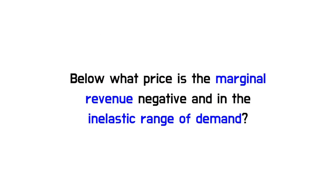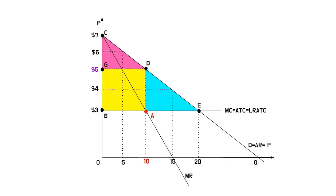Sixth, below what price is the marginal revenue negative and in the inelastic range of demand? The answer would be 4, because we can see that the MR is negative below that.